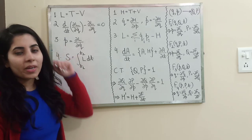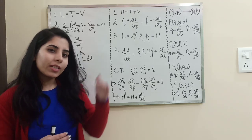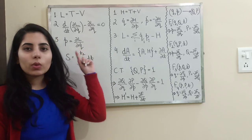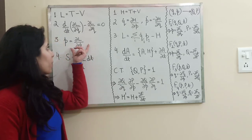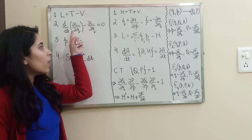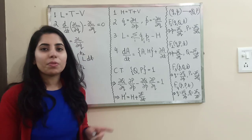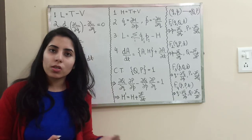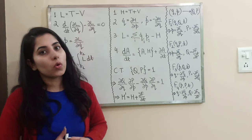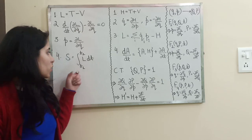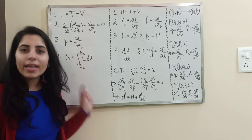Next we have the generalized momentum formula in terms of Lagrangian: P equals ∂L/∂q̇, where q̇ represents the generalized velocity. When you substitute this, you get dP/dt, which represents the generalized force. For the action, the formula is the integral from T1 to T2 of L dt, where L is the Lagrangian.